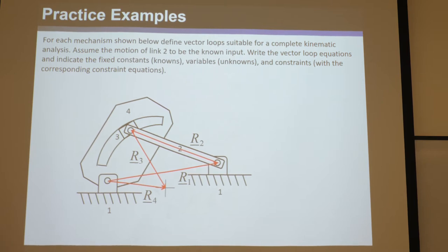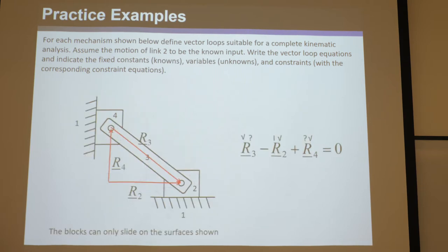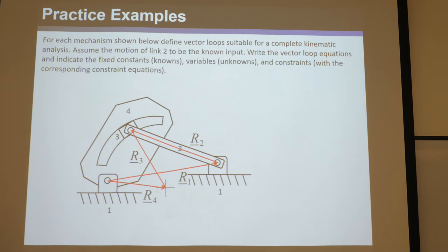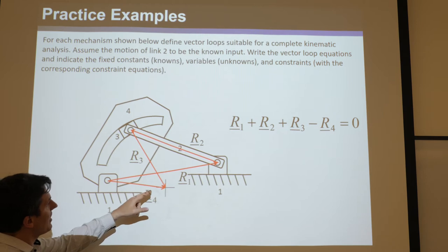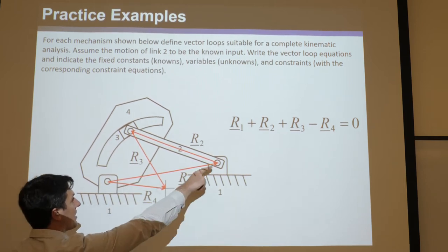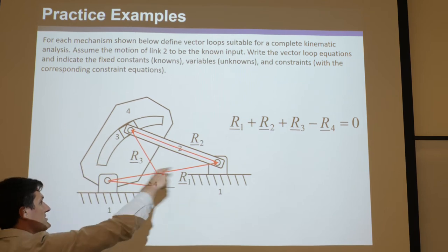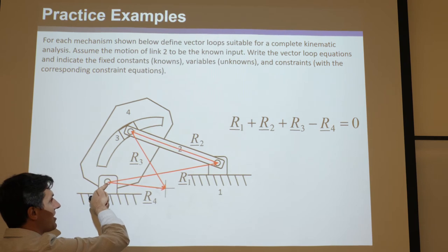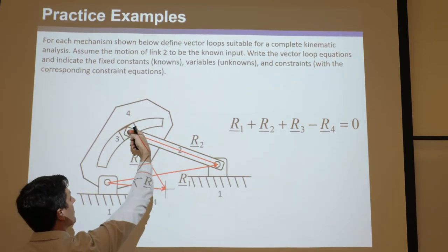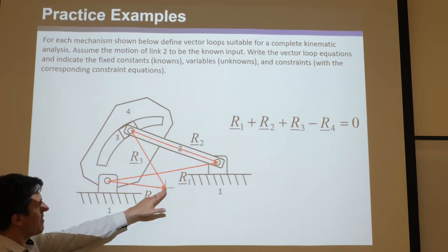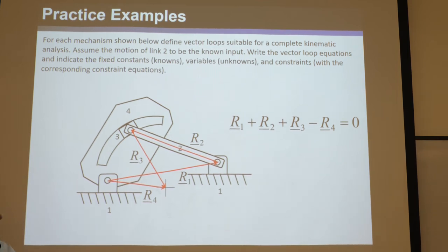This vector loop should work. We have as many vectors as we have links — though that's not always necessary. Sometimes you have fewer, as in our last example with four links but only three vectors. Sometimes you have more vectors than links, so don't think you have to have as many vectors as there are links. In this case, we happen to. We started here and walk this direction. Since we're going from head to tail for R4, the loop is: plus R1, plus R2, plus R3, minus R4, equals zero.